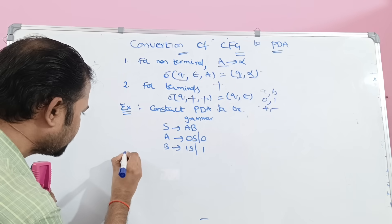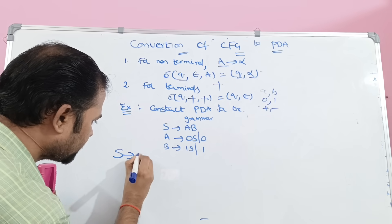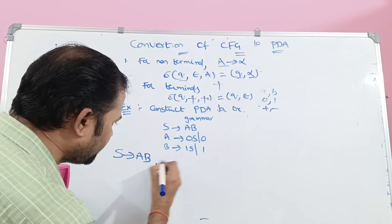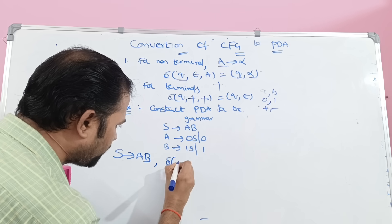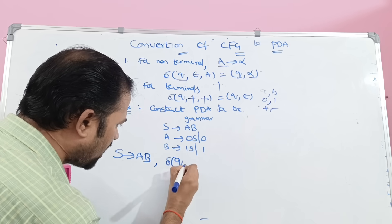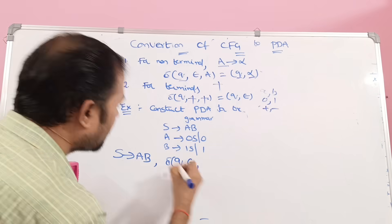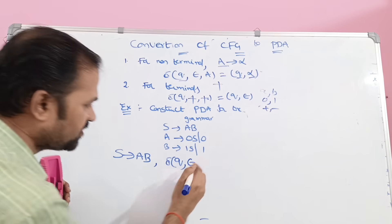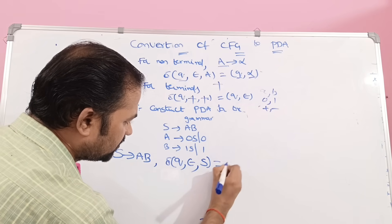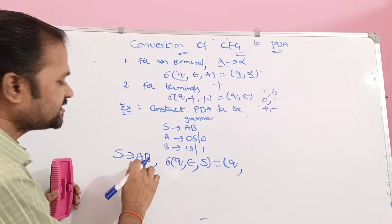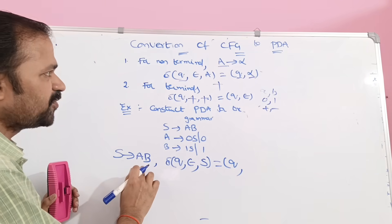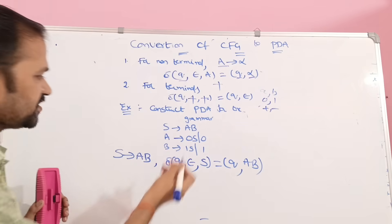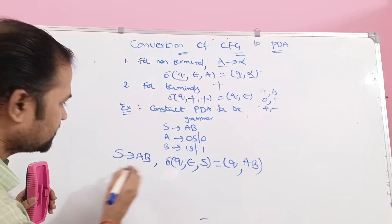The first production is S implies AB. For this production, we can write it as delta of (Q, epsilon, S) = (Q, AB). Here S is the left-hand side of the production, and AB is the right-hand side. So this is the first transition function.